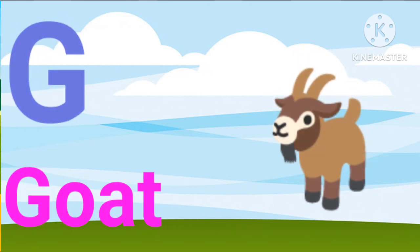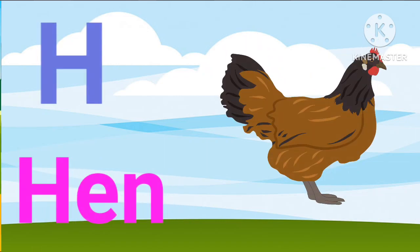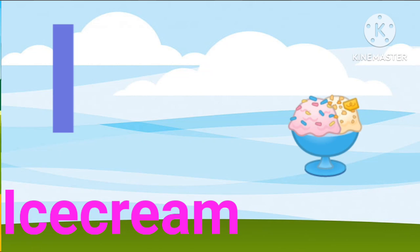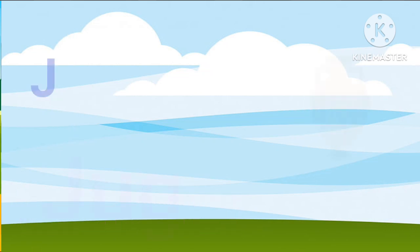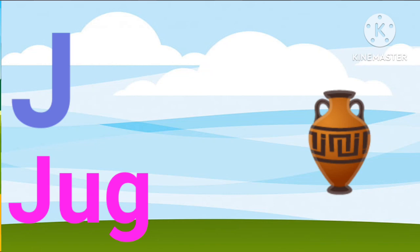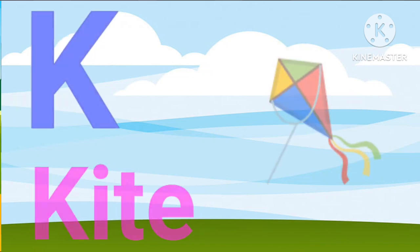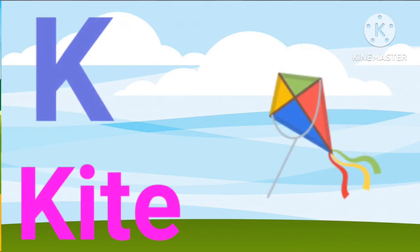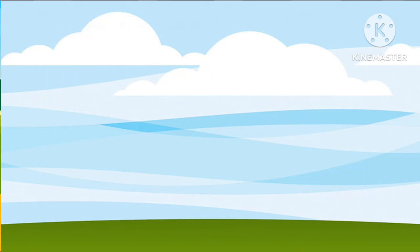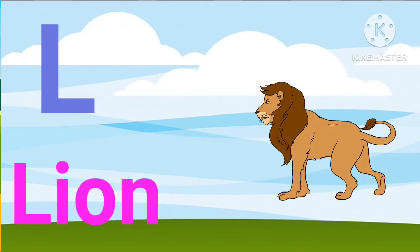G for goat, H for hen, I for ice cream, J for jug, K for kite, L for lion.